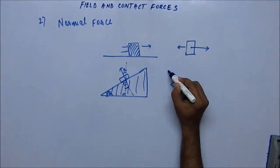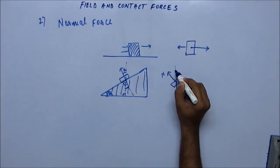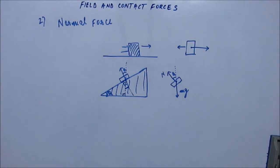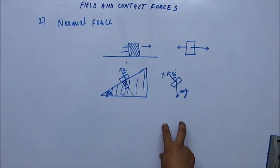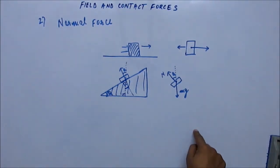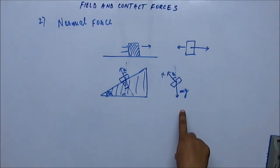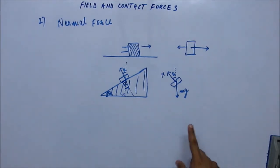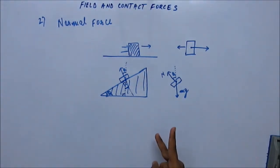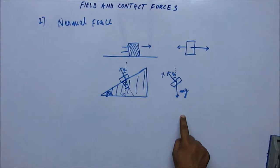So there are two forces we can identify immediately: mg and N, and the angle of the normal reaction with the vertical is theta. If there is no friction, these are the only two forces acting on the block. We are going to study equilibrium of an object after we see all the common forces. We are trying to identify forces first, and after that we will examine whether a particular body is in equilibrium or not.